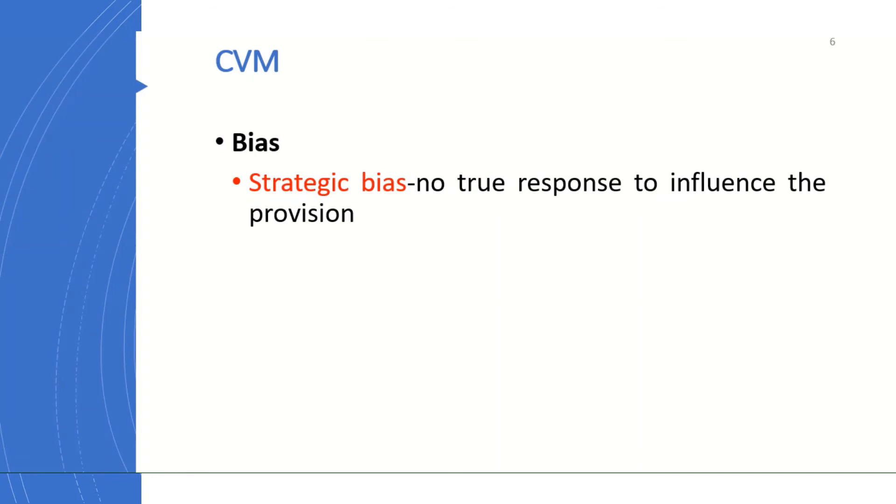The other bias is called strategic bias, where respondents give not true response to influence the outcome of the research, the provision of the plan proposed. This is done either by overstating willingness to pay or understating willingness to pay, hoping to free ride.